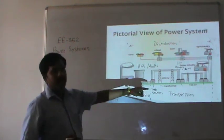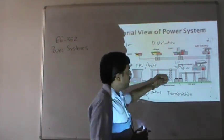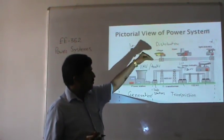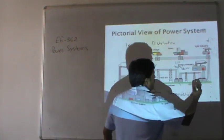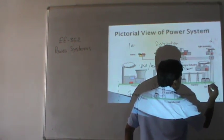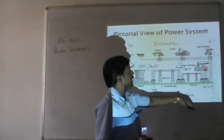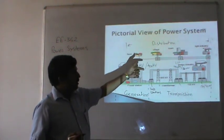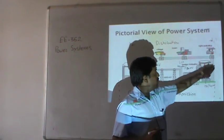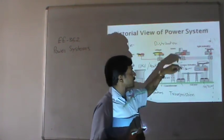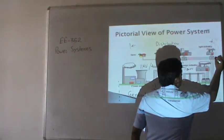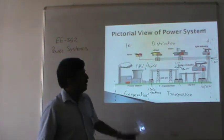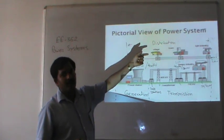With the help of a power transformer, the voltage is stepped down once again from 132 kV to 33 kV and sent to heavy industries. The voltage is stepped down further from 33 kV to 11 kV for light industries. For the distribution section, the voltage requirement is lower — say 400 volts for commercial purposes and 220 volts for domestic purposes. The voltage is stepped down from 11 kV to 400 volts, and subsequently from 440 volts to 220 volts.